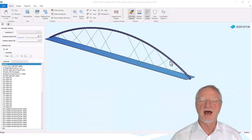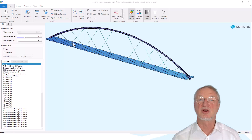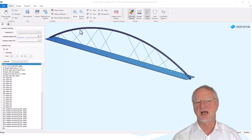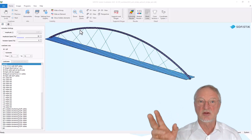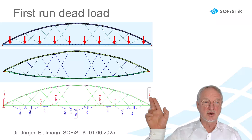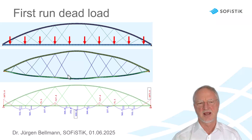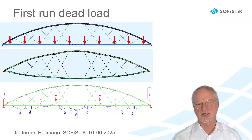We have here a nice and easy footbridge with an arc, a longitudinal beam, some diagonal hangers. I simplified the bridge a bit to concentrate on the main effects. When we first only run dead load we get a deformation of the arc and the hangers get a lengthening, and the superstructure gets big bending moments.